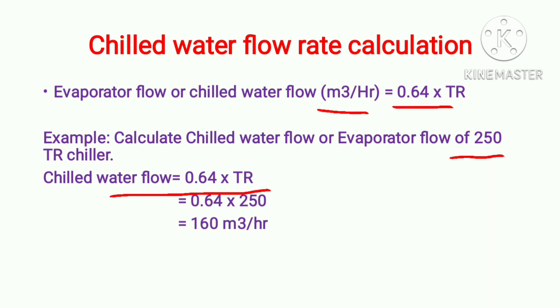We put the values: 0.64 into 50 TR — this is the capacity of our chiller. After calculation we are getting 160 meter cube per hour. This is the chilled water flow rate for that chiller.